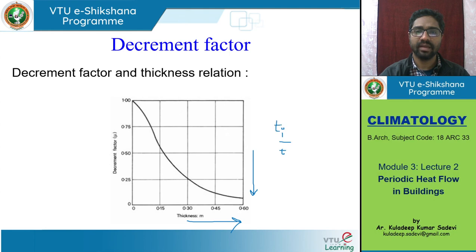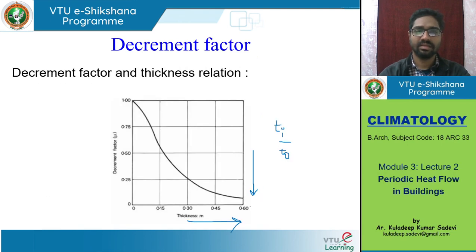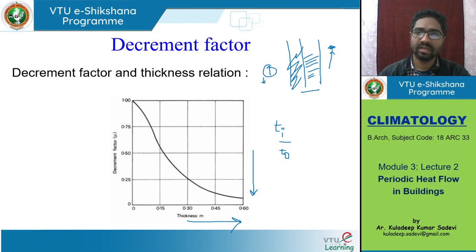T_i max by T_o max — so T_i max will not be so high if the thickness is more. For a given wall, if I increase the thickness very high, and the outer temperatures reach 30 or 40°C, the inner temperatures will not go so high. So if inner temperature is lesser because the wall thickness is more, the decrement factor is also lesser. We should understand that more the thickness, the decrement factor will be reducing.